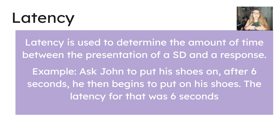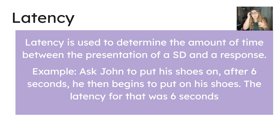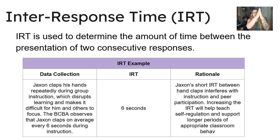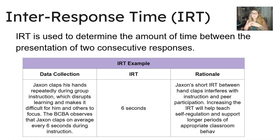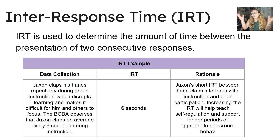Latency is used to determine the amount of time between the presentation of an SD and a response. For example, you ask John to put on his shoes and after six seconds he begins to do so — the latency is six seconds. For IRT, an example would be Jackson clapping his hands repeatedly during group instruction: the BCP observes that Jackson claps on average every six seconds, so the IRT is six seconds between two consecutive responses. Increasing the IRT will help teach self-regulation and support longer periods of appropriate classroom behavior.